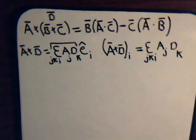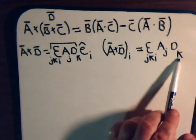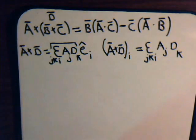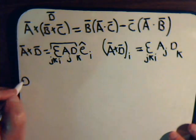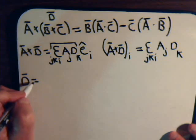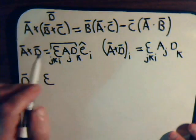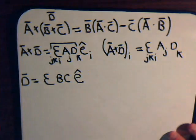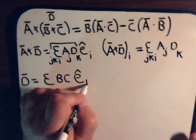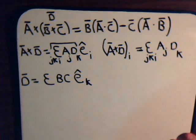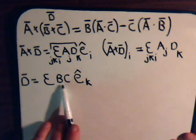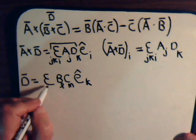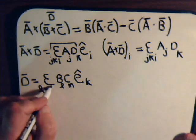But, now, D is this cross product. So, D sub K, we should be able to get an expression for that, in terms of B and C, using, of course, the epsilon permutation symbol. So, we have D equals, that's B cross C, so that would be epsilon, B, C, times some unit vector. And we want a K-th component, so this would be K.